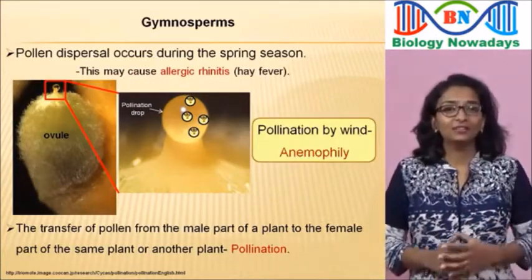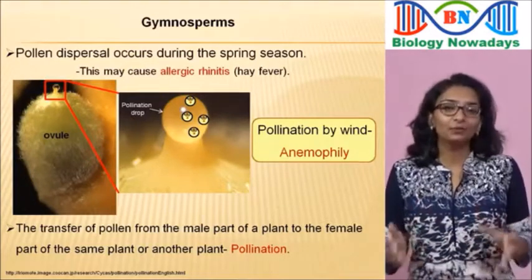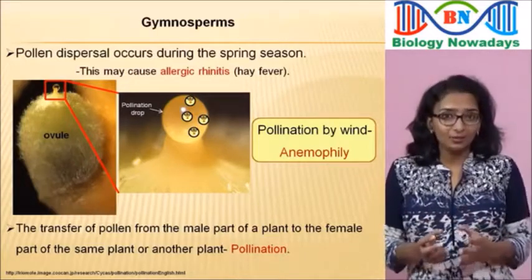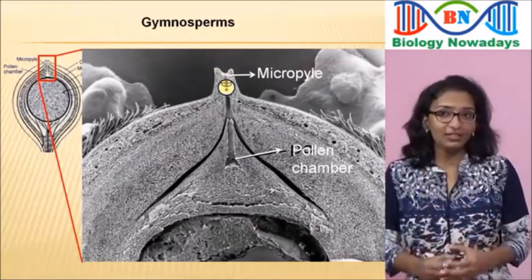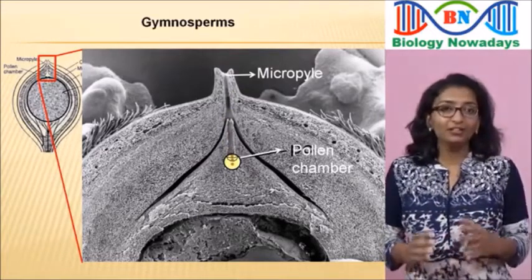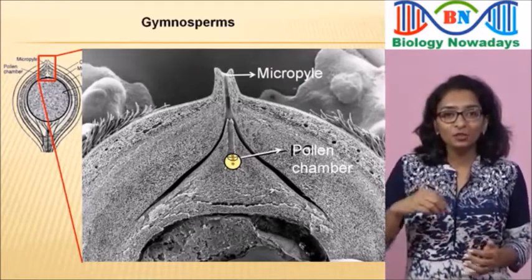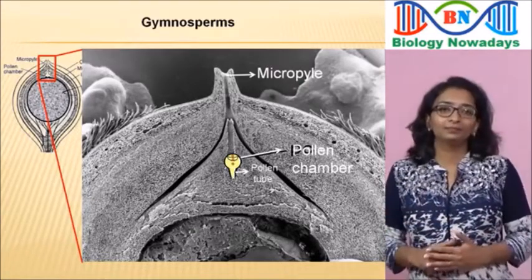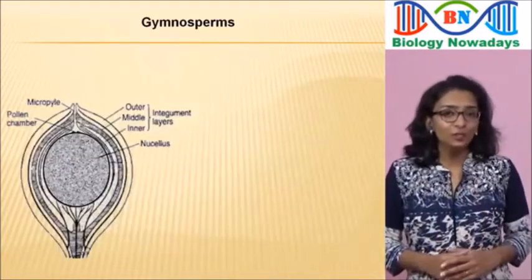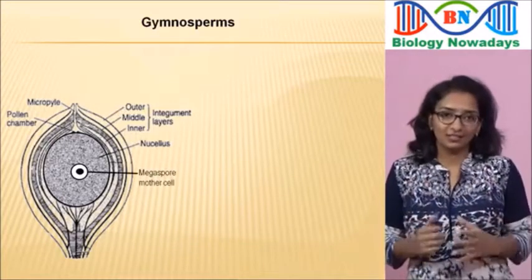The pollen grains can travel with wind for miles and can withstand extreme drying. The pollination drop then dries out and the pollen grains are drawn into the pollen chamber of the ovule. The micropyle is closed and a pollen tube starts to develop from the pollen grain. After about a month of pollination, one cell of the nucellus gets differentiated into a megaspore mother cell.